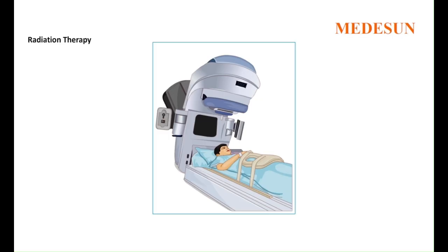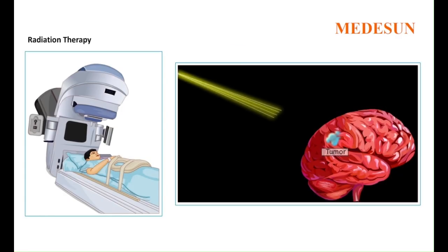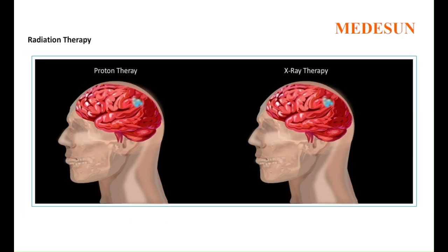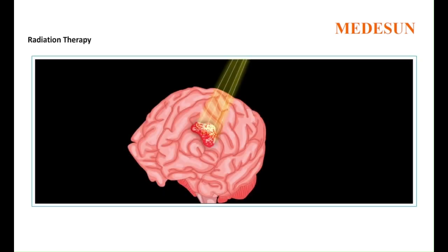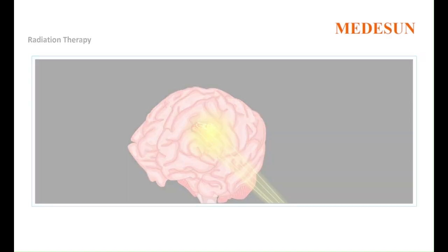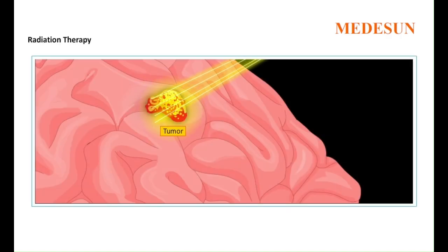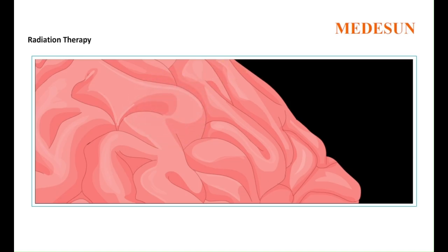Radiation therapy is a technique used for cancer treatment. It uses beams of intense energy to kill cancer cells. Radiation therapy often gains power from X-rays, but the power can also be derived from protons. Radiation therapy damages the cancerous cells; during radiation therapy, some healthy cells are also damaged, but the main goal of this therapy is to destroy as few normal healthy cells as possible.